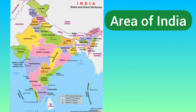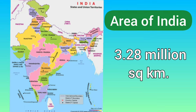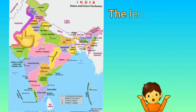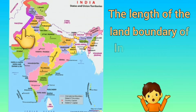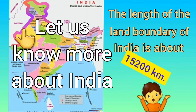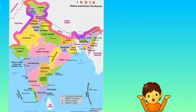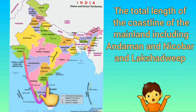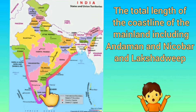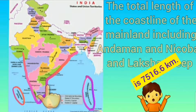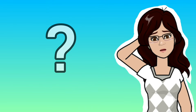India has an area of 3.28 million square kilometers. The length of the land boundary of India is about 15,200 kilometers, and the total length of the coastline of the mainland including Andaman and Nicobar and Lakshadweep is 7,516 kilometers.